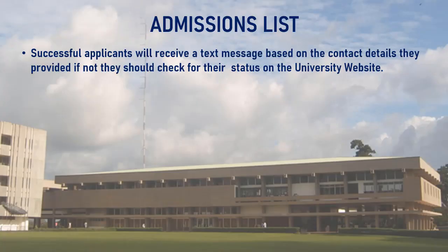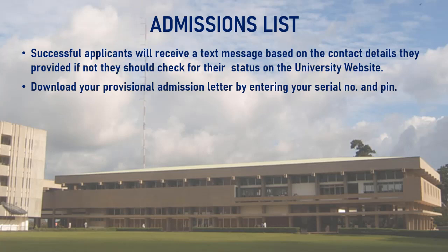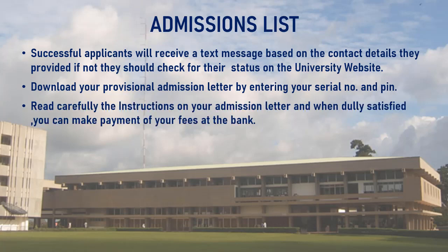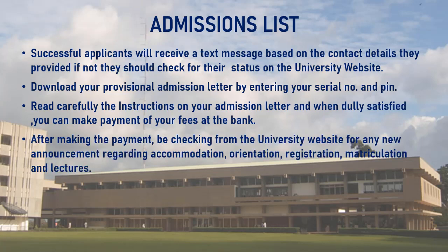Successful applicants will receive a text message based on the contact details they provided; if not, they should check their status on the university website. Download your provisional admission letter by entering your serial number and PIN details — always keep these login details safely. Read carefully the instructions on your admission letter and, when satisfied, proceed to make payment of your fees at the bank. After making payment, check the university website for announcements regarding accommodation, orientation, registration, matriculation, and when lectures will begin. You may also visit the official KNUST website at apps.knust.edu.gh/admissions.